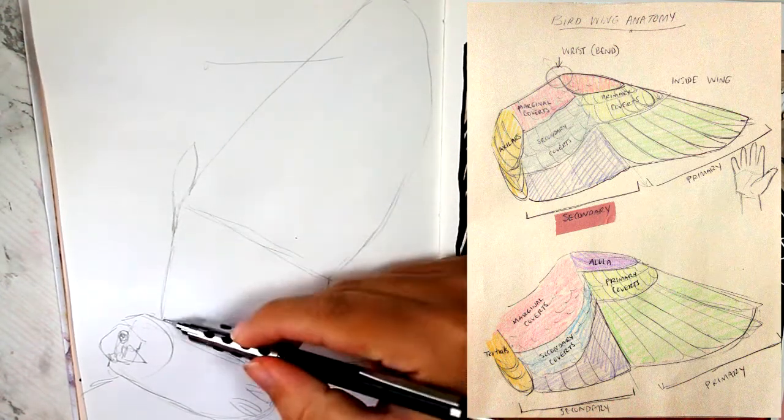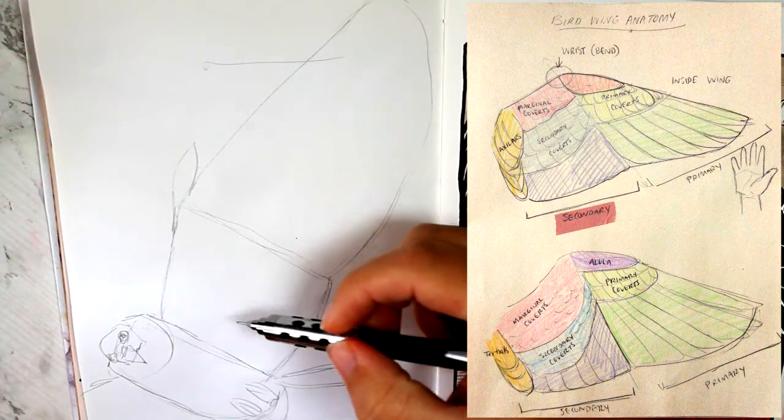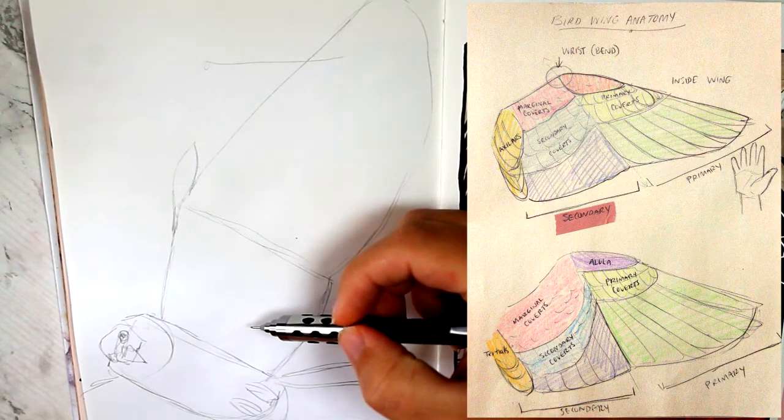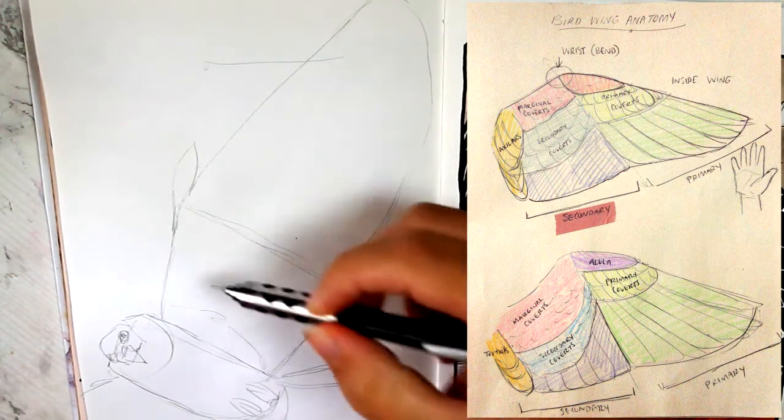Some of them have this tiny feather on the elbow part that kind of looks like a thumb if this was a human hand, I guess. This is a large bird, so he has very noticeable axillars, or however you say that word.